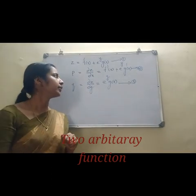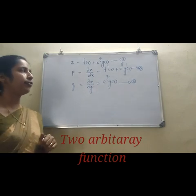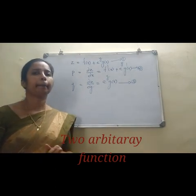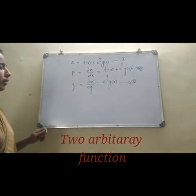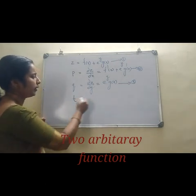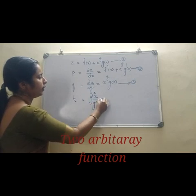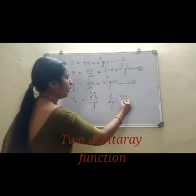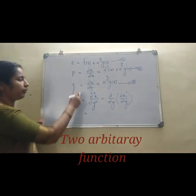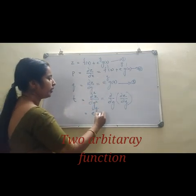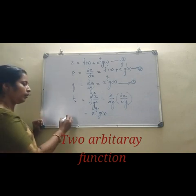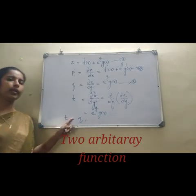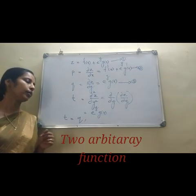This is not like the previous examples because here we cannot eliminate F and G by using just these three equations. So we take second-order derivatives. It is convenient to write t = dou square z by dou y square. Differentiating q = eʸ G(x) partially with respect to y gives eʸ G(x). So t = eʸ G(x) = q, by equation 3. This equation contains partial derivatives, so t = q is the required partial differential equation.